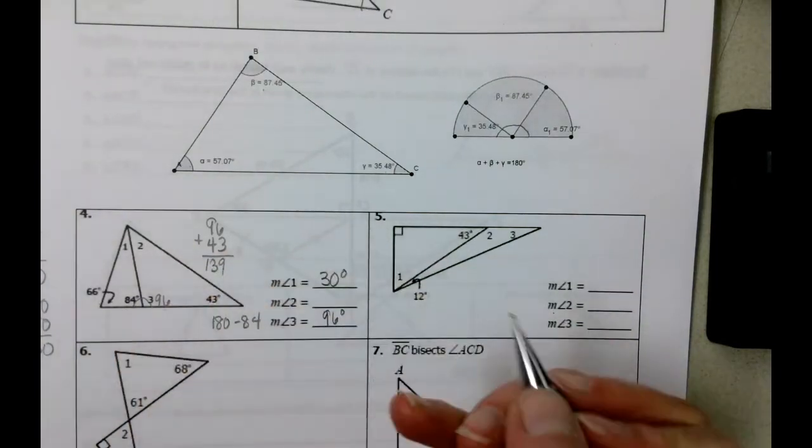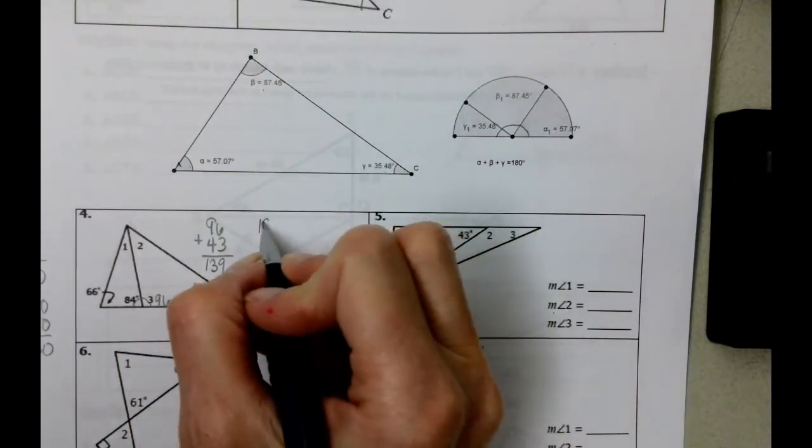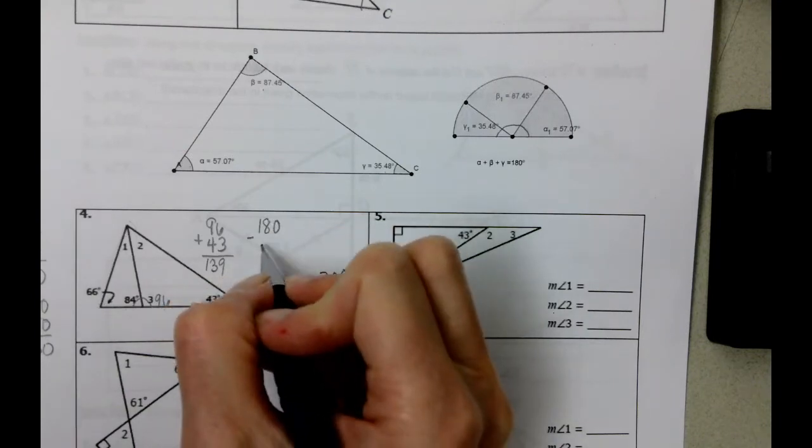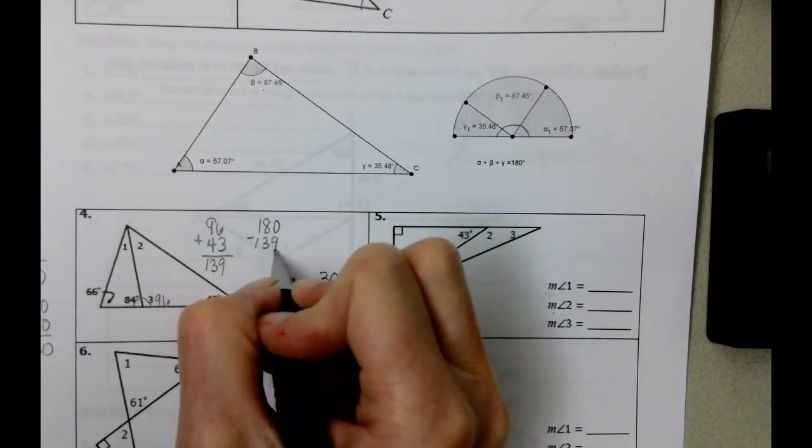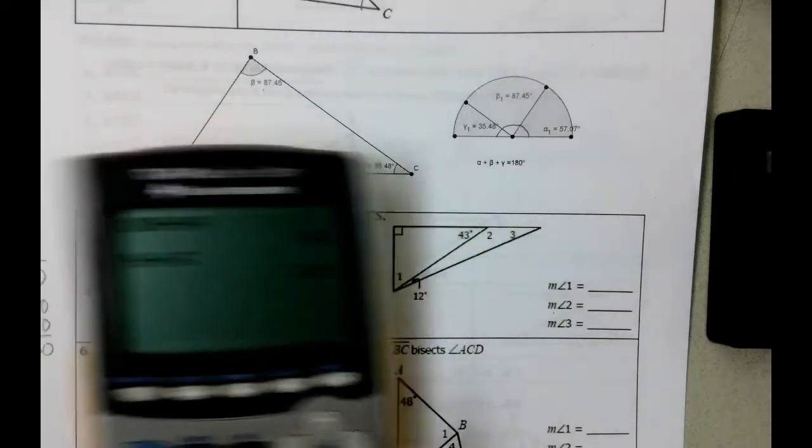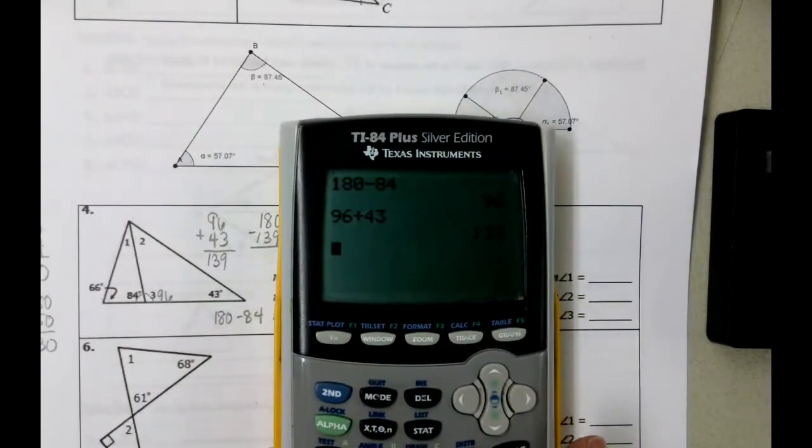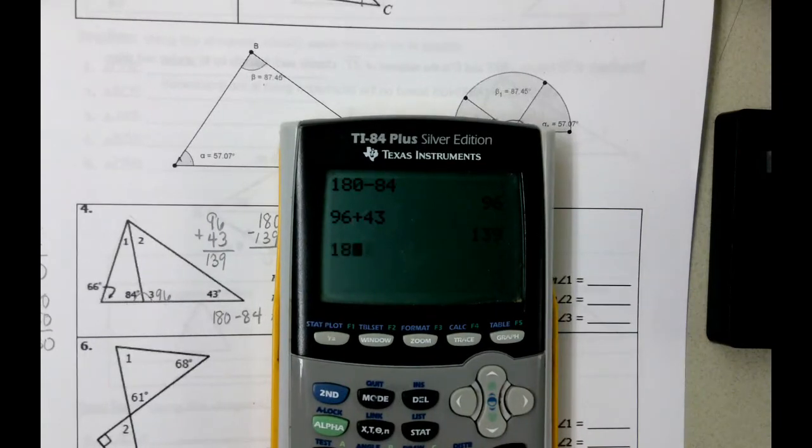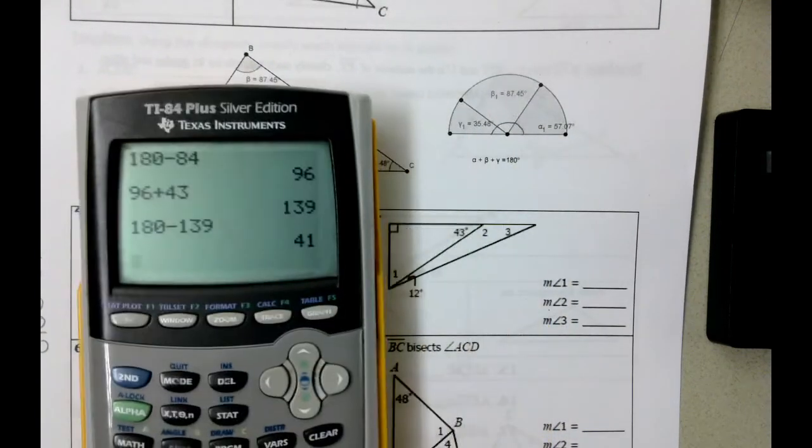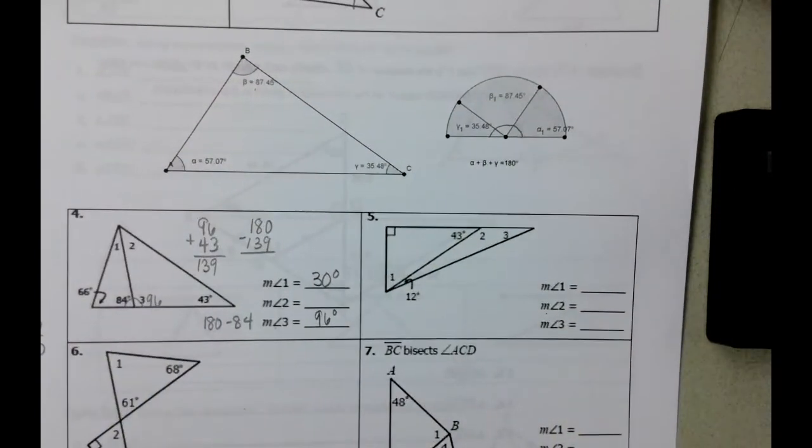And then to figure out what angle two is, we're going to take 180 and we're going to subtract 139. Use Desmos, use a calculator, don't use some weird app on your phone, or on the computer for that matter. 180 minus 139, you can't see it very well, but it's 41 degrees.